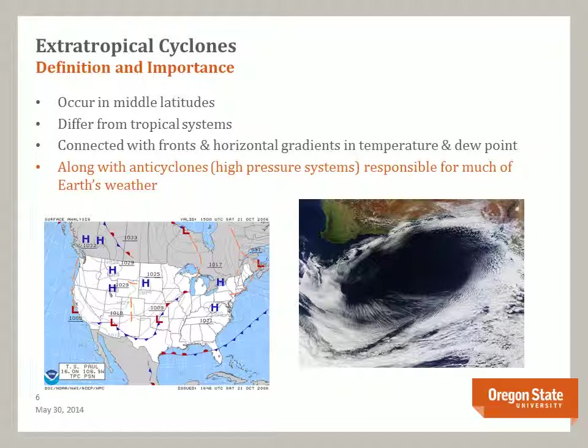Extratropical cyclones, along with anti-cyclones, are responsible for much of Earth's weather. Remember, anti-cyclones are areas of high pressure around which air moves in a clockwise direction in the Northern Hemisphere, and a counter-clockwise direction in the Southern Hemisphere. The map on the left shows several anti-cyclones across North America. The satellite image on the right shows an anti-cyclone off the coast of Australia. In this case, the air circulation is anti-clockwise, because of the location in the Southern Hemisphere.